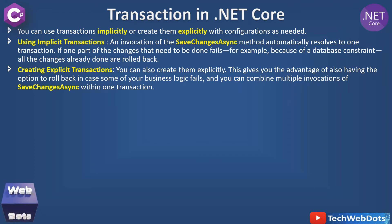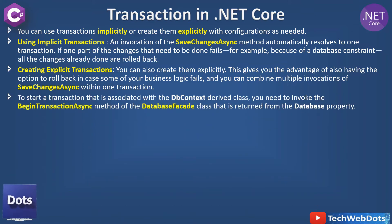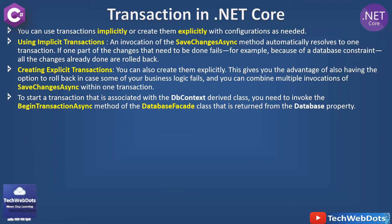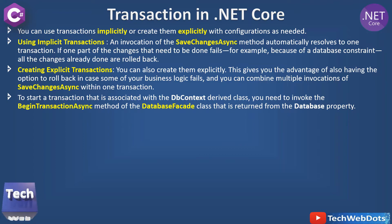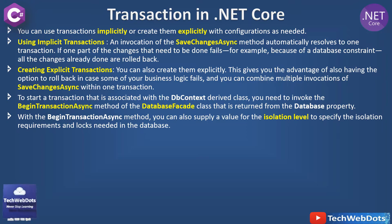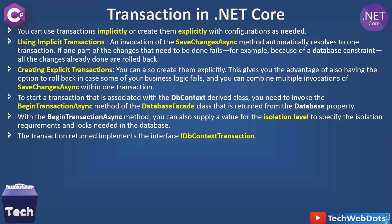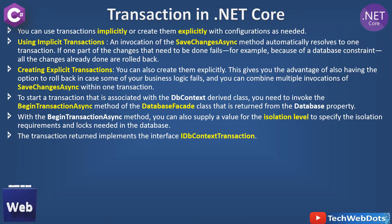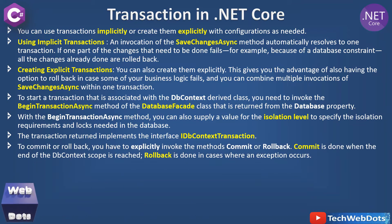Don't worry if these things are not clear — I will explain again in the practical session. To start a transaction associated with the DbContext-derived class, you need to invoke the BeginTransactionAsync method of the DatabaseFacade class, which is returned from the Database property. With BeginTransactionAsync you can also supply an isolation level value to specify the isolation requirements and locks needed in the database. The transaction returned implements the interface IDbContextTransaction.